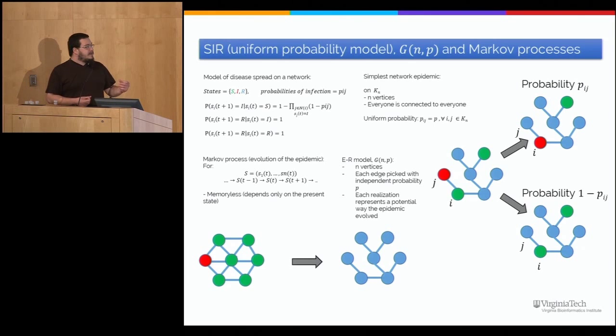So you can see to the right that suppose the red vertices are infected, the green vertices are susceptible, and the blue vertices are recovered. One way the system could evolve with probability P_IJ, which in this case is just the constant probability P, is the one above. And with complement probability it could evolve to the one below.